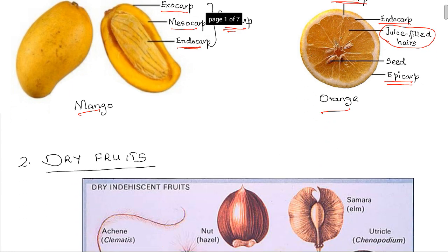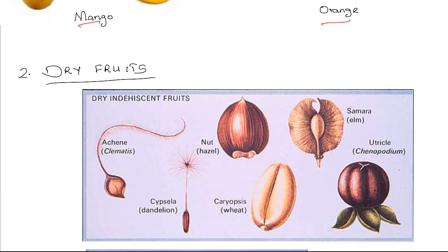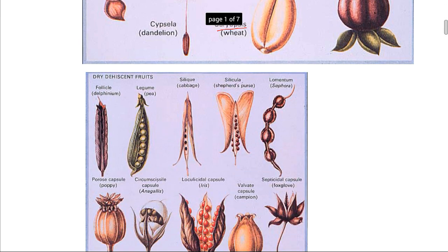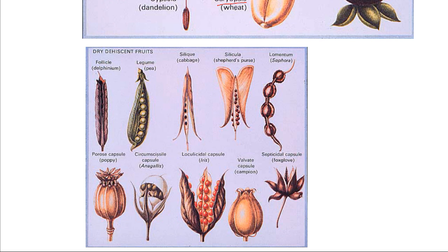The other type of fruits are the dry fruits, in which the pericarp is dry and the three layers are not distinguishable. There are two types of dry fruits: the indehiscent fruits — the ones that do not split at all, like the achenes, the nuts, the samaras, and the caryopsis — and then we have the dehiscent fruits, in which upon drying up the pericarp splits, thereby releasing the seeds within.